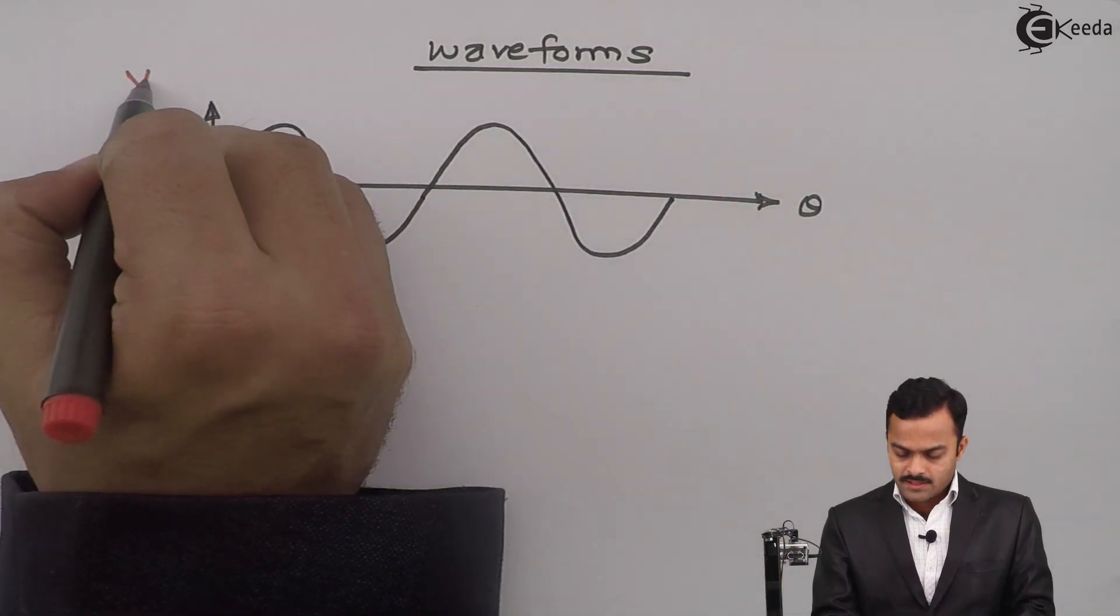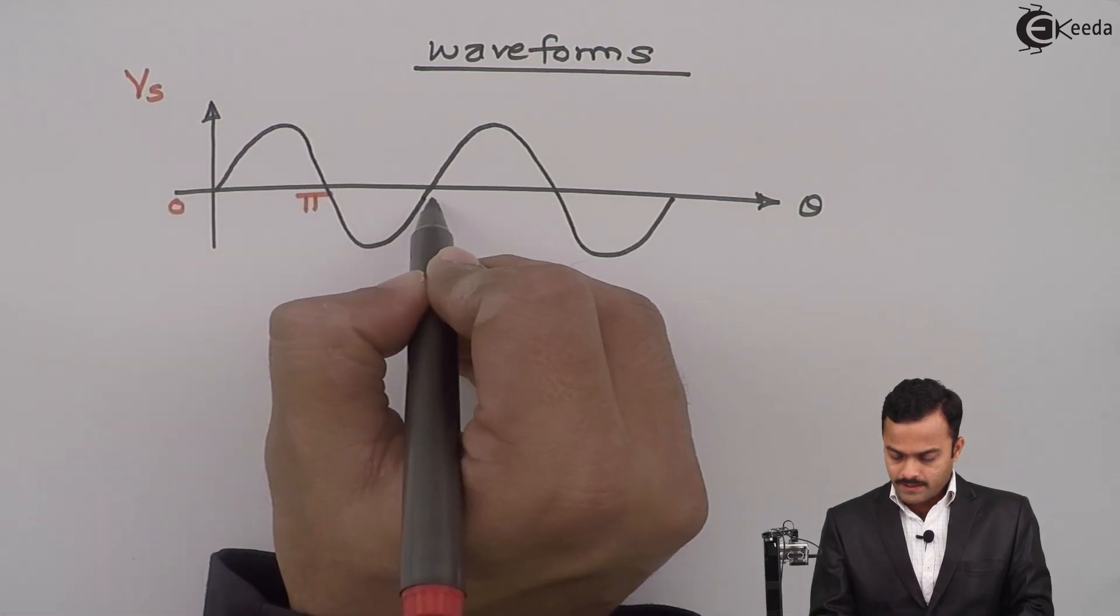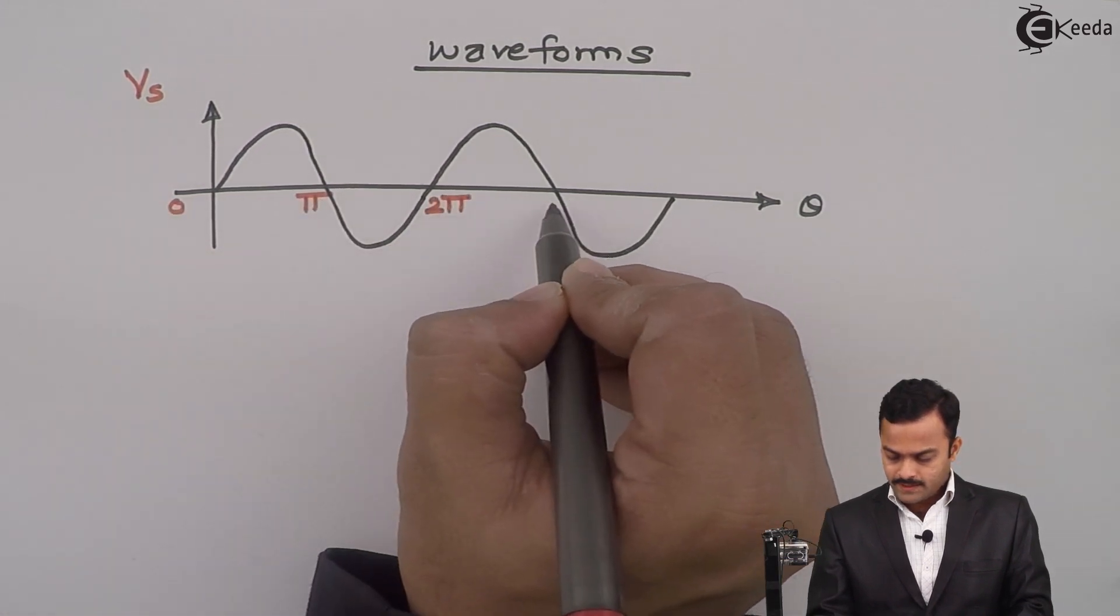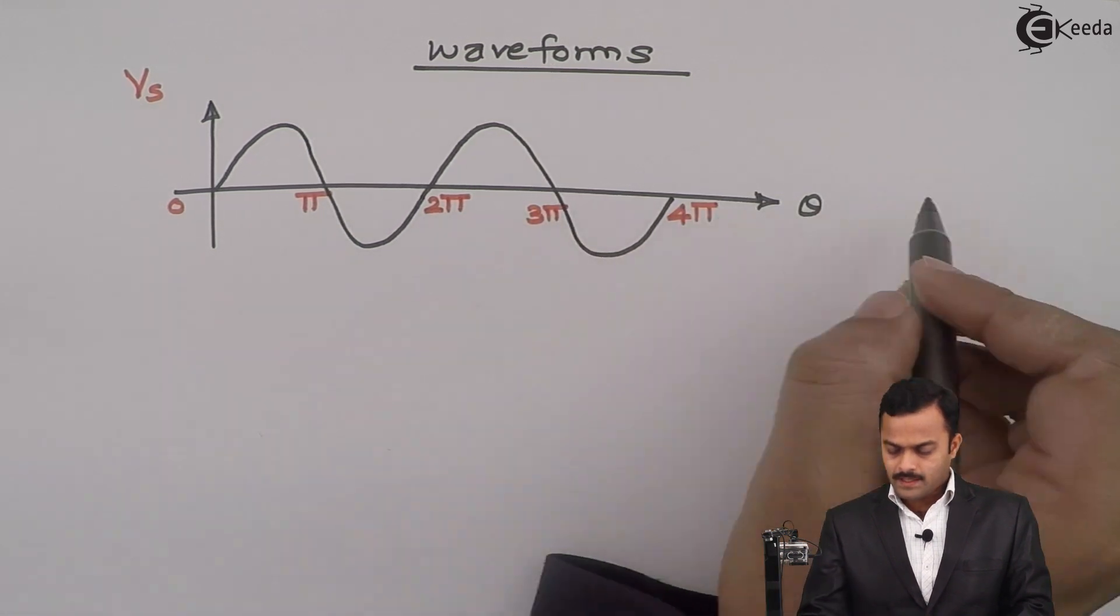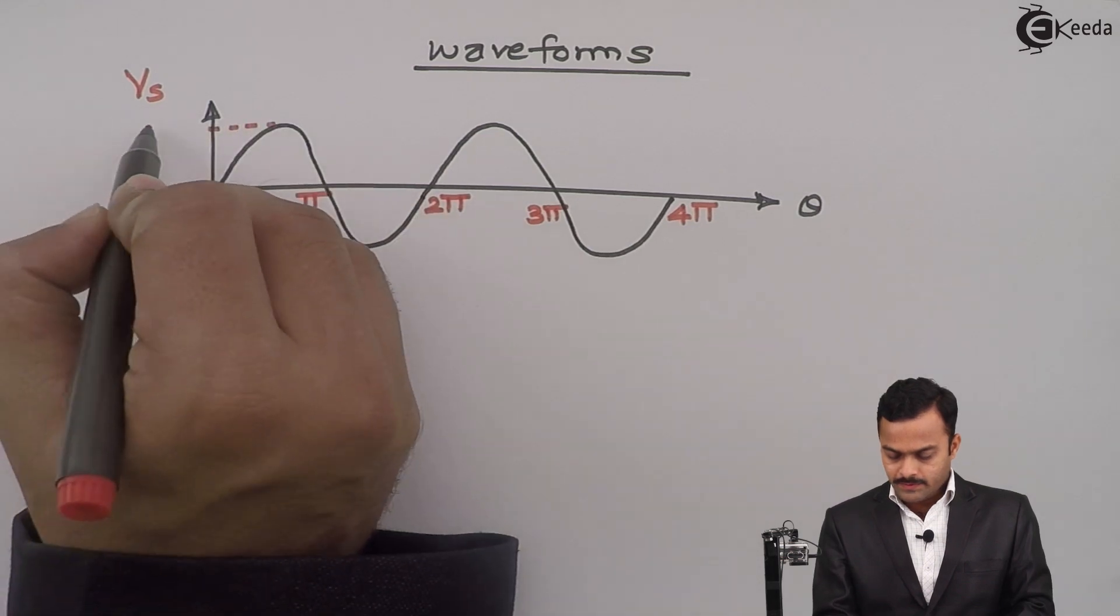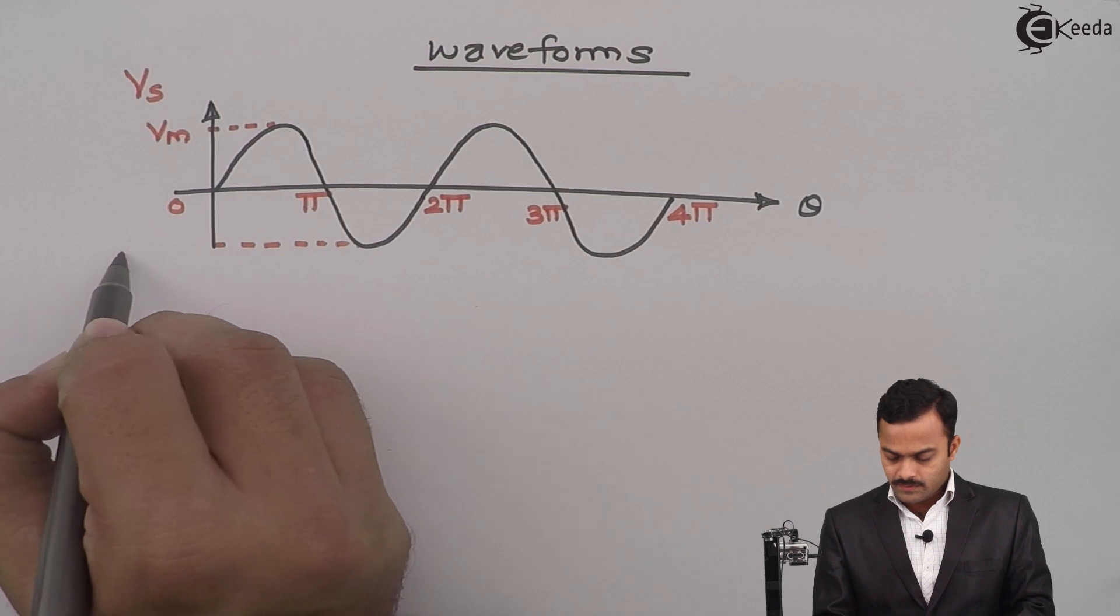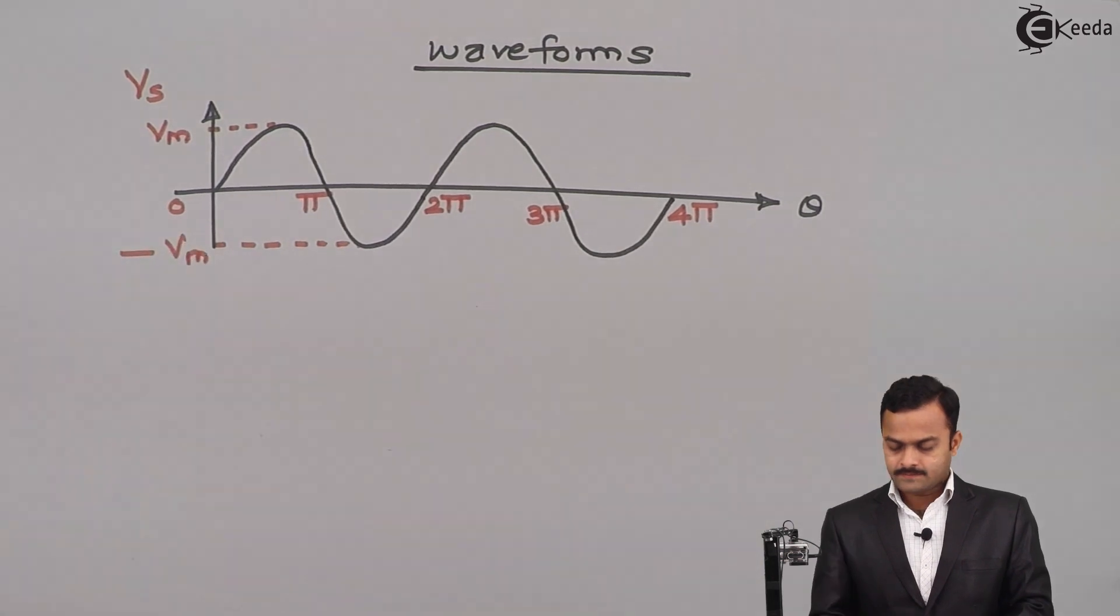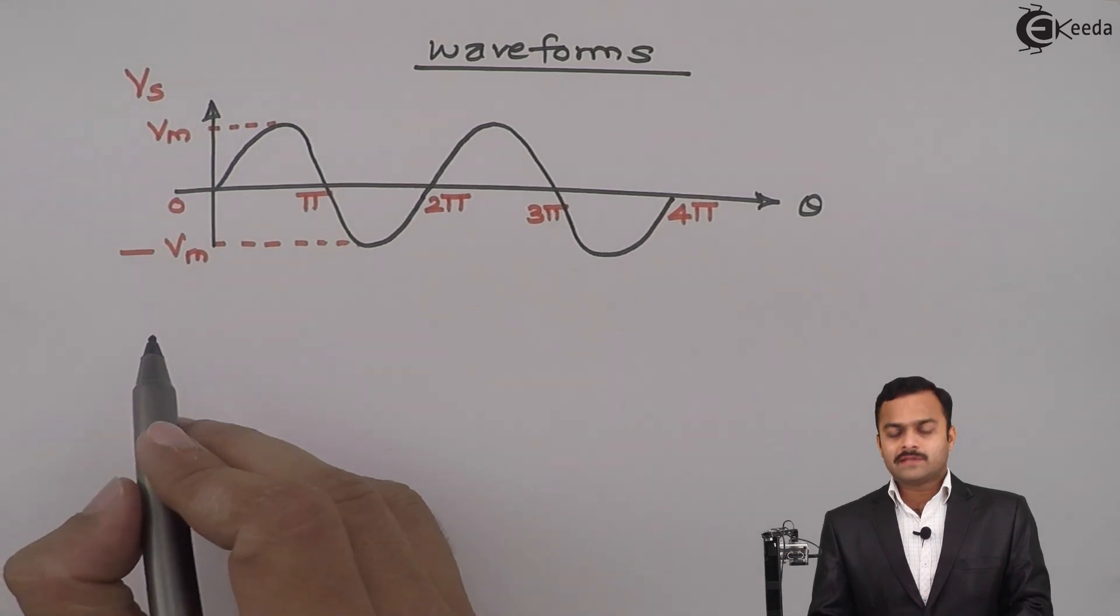So this is supply voltage Vs. This is zero, pi, 2pi, 3pi, 4pi, like this. This will be positive peak, this will be negative peak. So if this is the supply voltage, what will be the output voltage?